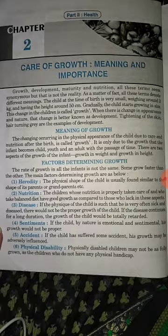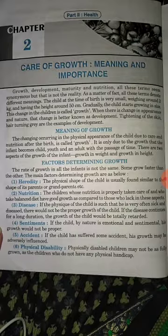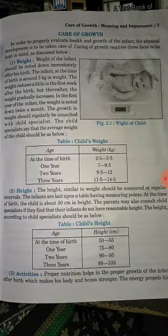Nutrition is very important — if you are taking good nutrition, your growth will also be good. Diseases also affect growth: if one child is always sick and another is healthy, the healthy child's growth will be much better. Sentiments — if a child is by nature emotional and sentimental, then also his growth may not be proper. Accidents — if a child has had an accident or is suffering from something, it also has an effect on his growth. Physical disability — children who are physically disabled also have their physical growth somewhat affected.